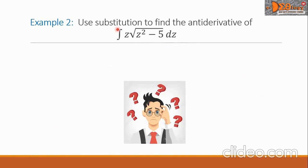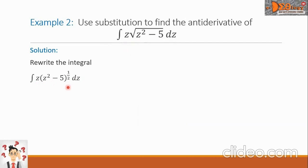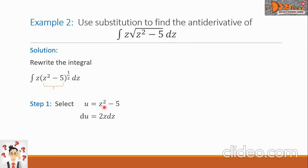Example 2: use substitution to find the anti-derivative of the integral of z times the square root of the quantity z squared minus 5, dz. For our solution, let us rewrite the radical as a fractional exponent: the integral of z times the quantity z squared minus 5, raised to 1 half, dz. Step 1: select u as z squared minus 5, and take the derivative of both sides: du equals 2z dz.